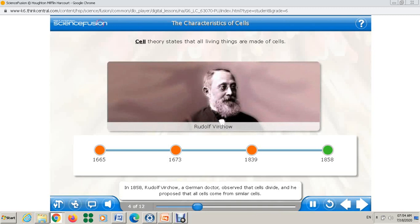In 1858, Rudolf Virchow, a German doctor, observed that cells divide and he proposed that all cells come from similar cells. Up until then, people thought that cells just appeared spontaneously. So Rudolf Virchow brought the third point of the cell theory: these cells are not generated spontaneously, they are generated from existing cells.